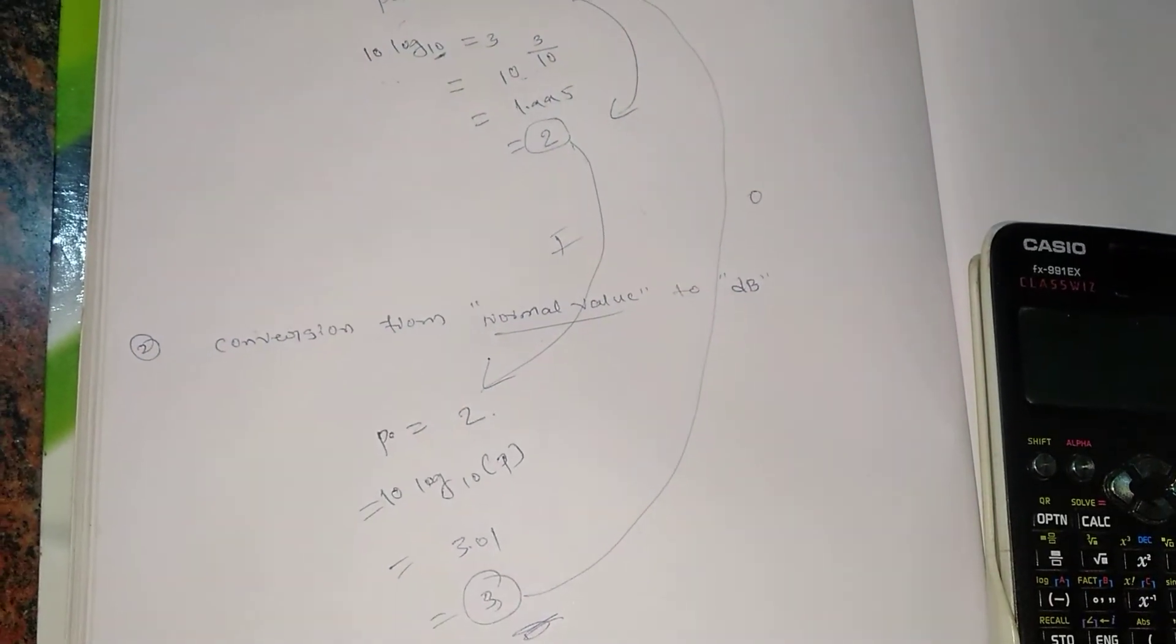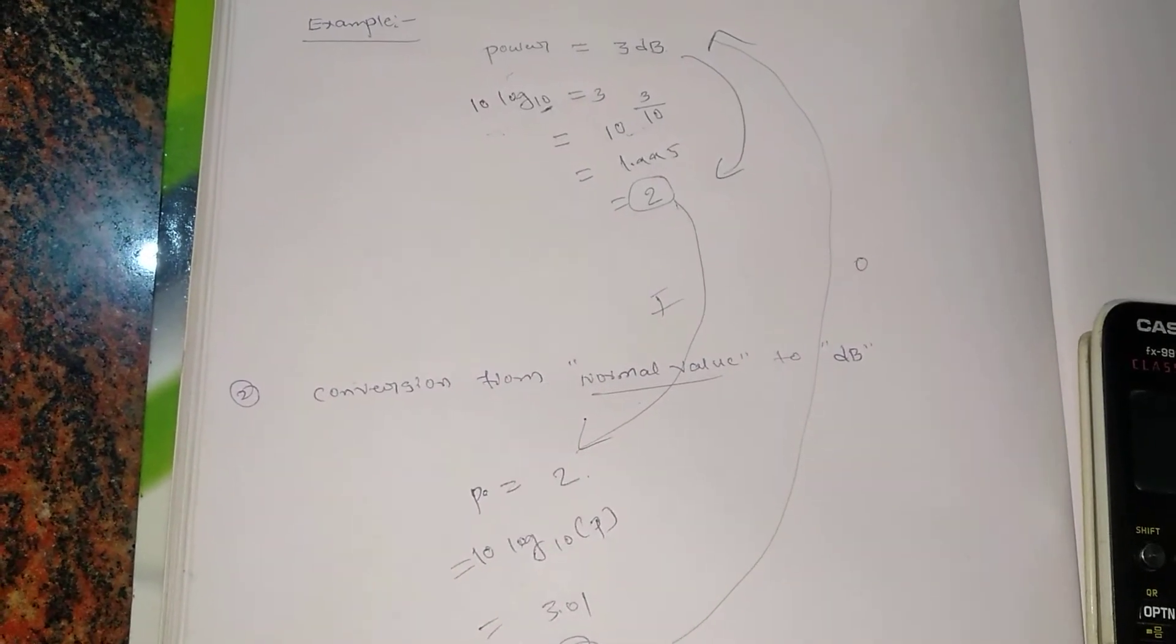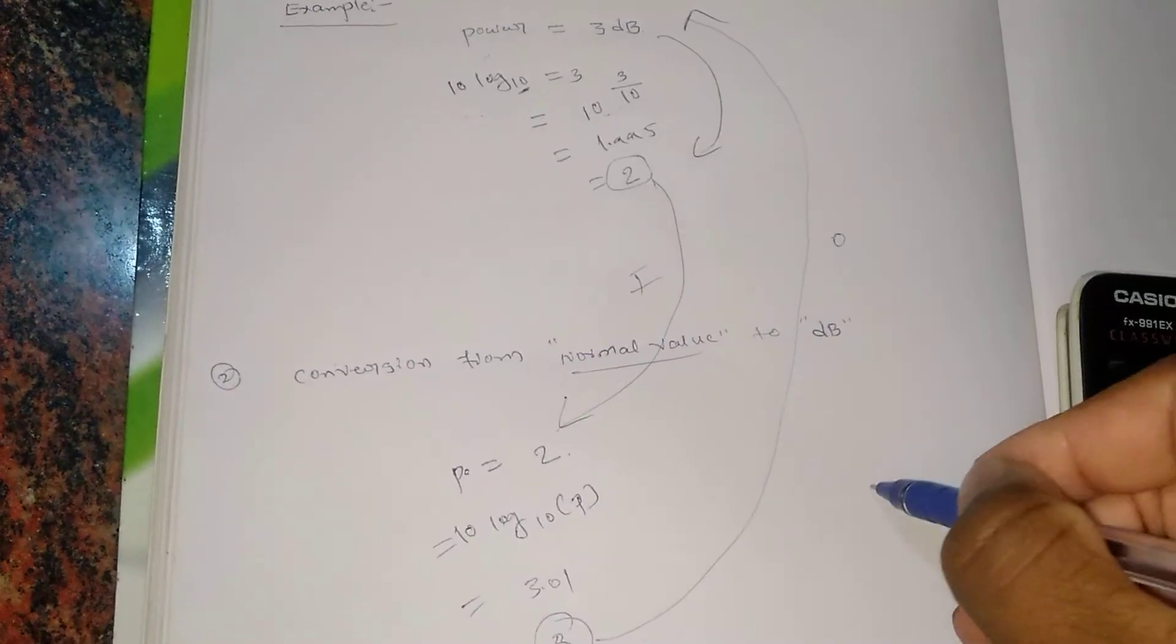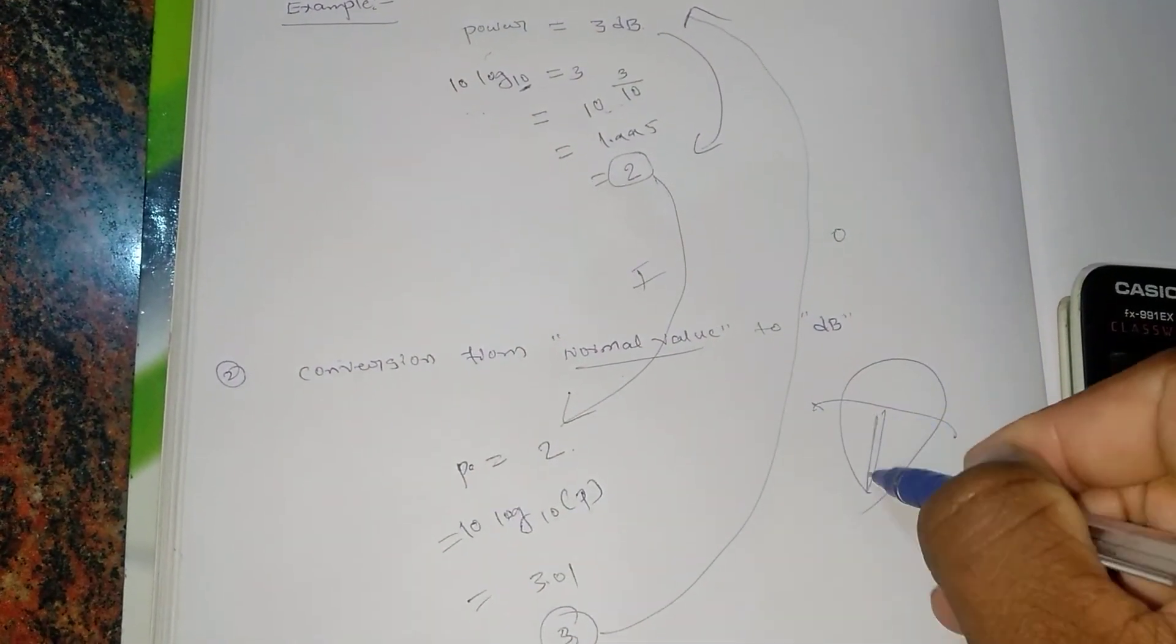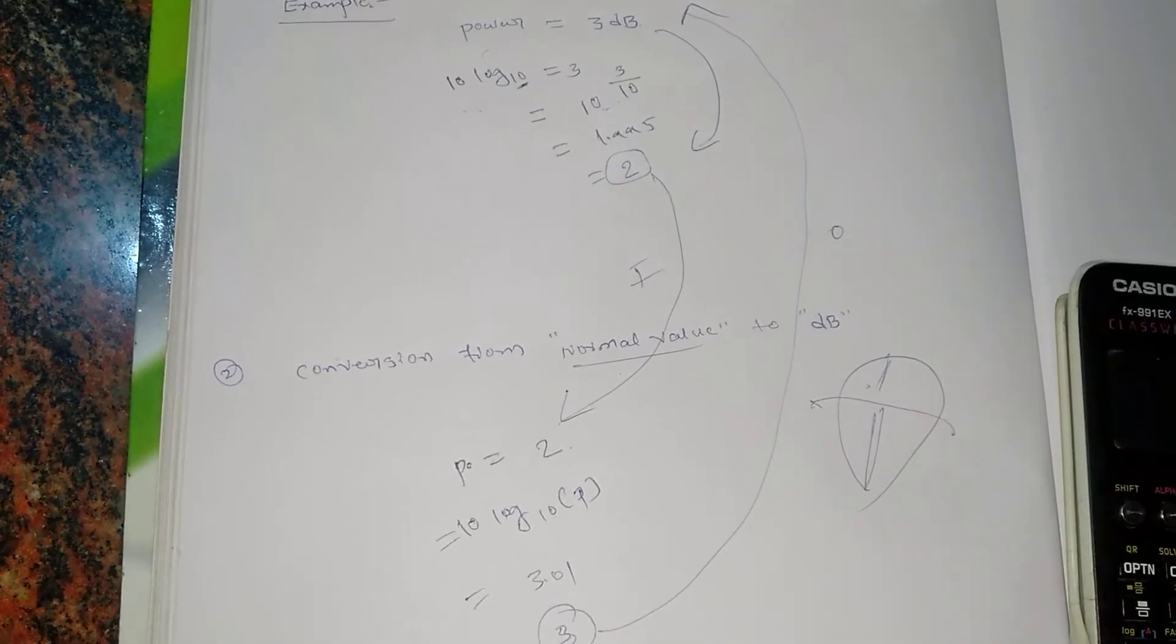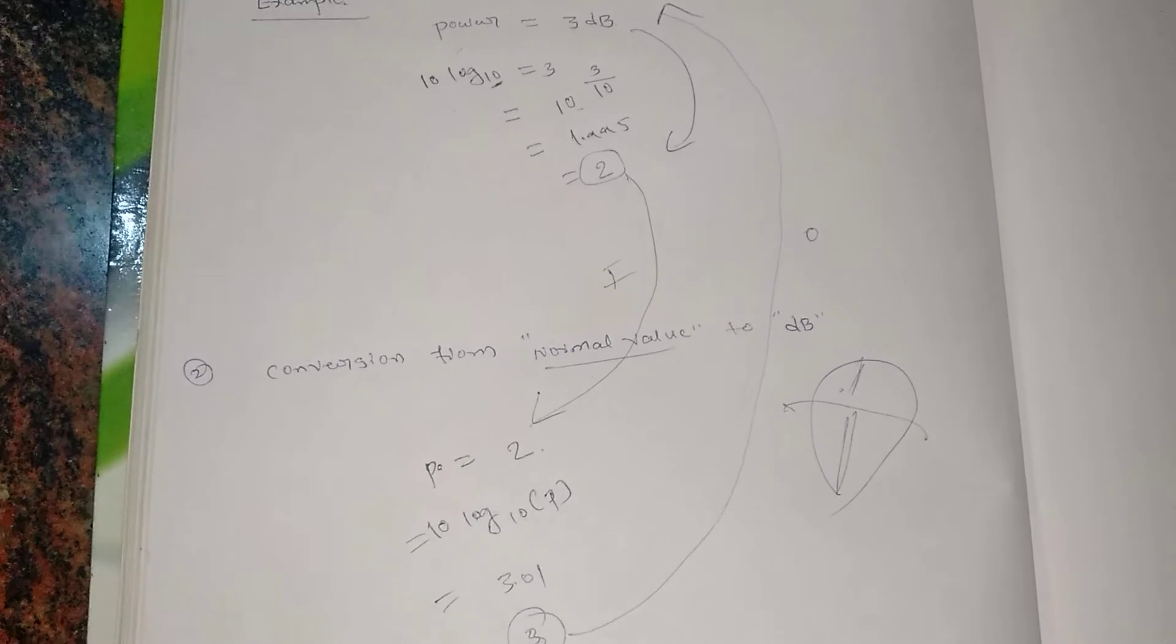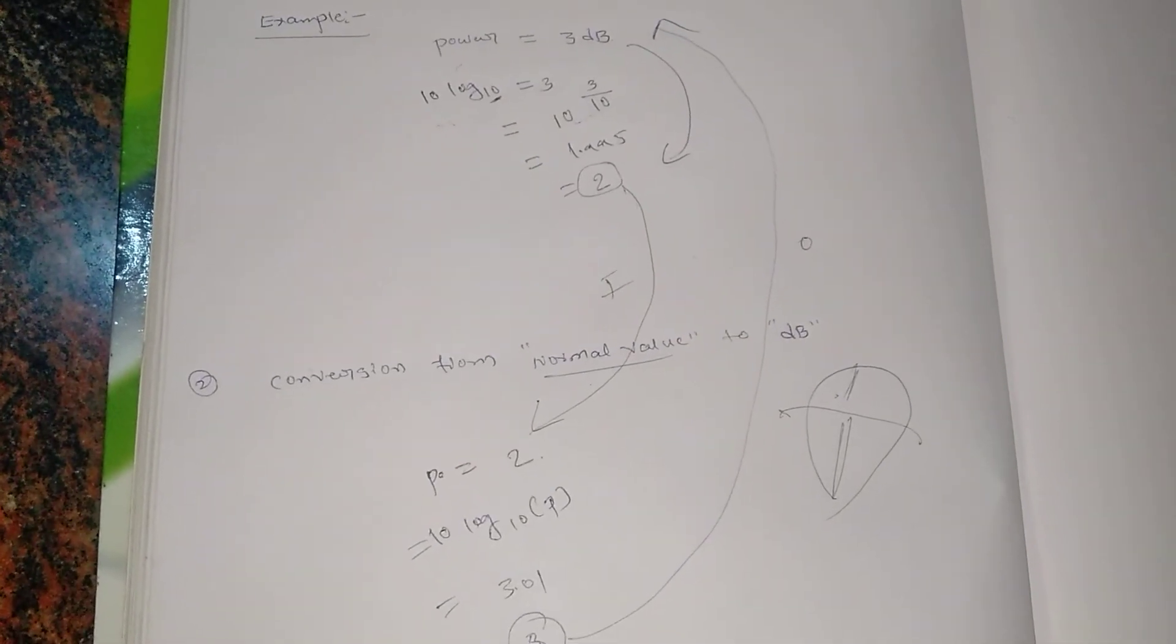When you convert 3 dB to normal it becomes 2, and when you convert normal value 2 to dB it becomes 3. Why am I taking 3 dB? Because we know all the frequencies in wireless communication are taken as 3 dB cutoff. If this is the beam, there will be 3 dB value here - this 3 dB value will be taken and this will be discarded. That's the standard practice in wireless communication and antenna propagation.